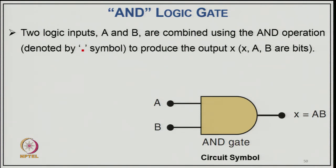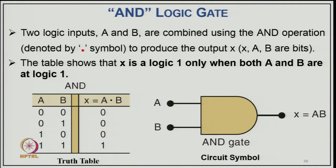The AND logic gate has two inputs A and B and output X = A·B. The symbol shows a box with a flat side on input and curved output. Two logic inputs A and B are combined using the AND operation (dot symbol) to produce output X. The truth table: X is logic 1 only when both A and B are logic 1. For 2 variables there are 4 combinations: 00→0, 01→0, 10→0, 11→1. This is because multiplication of two values gives 1 only when both are 1.